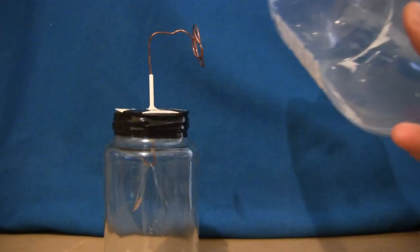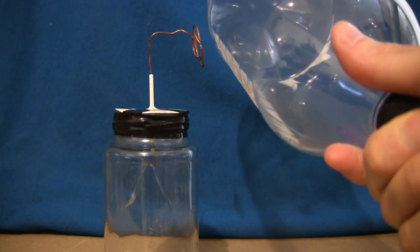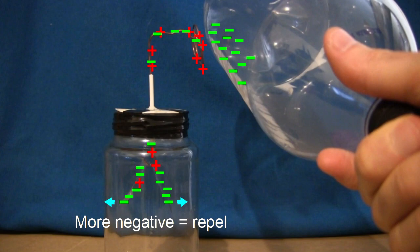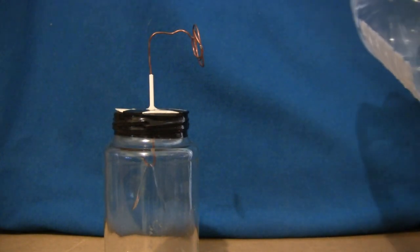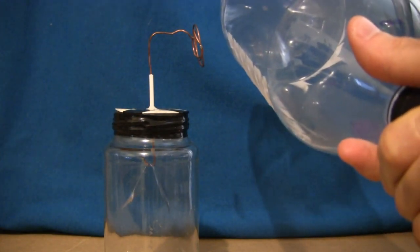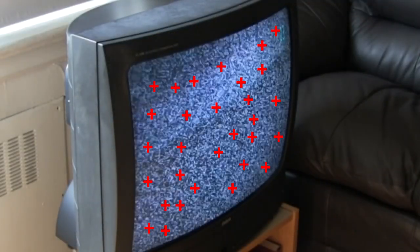In the case of the electroscope which we charged using the TV screen, the leafs spread apart more. That means they must have been negatively charged. And as we said before, the charged object has the opposite charge of the electroscope, so the TV must be positively charged.